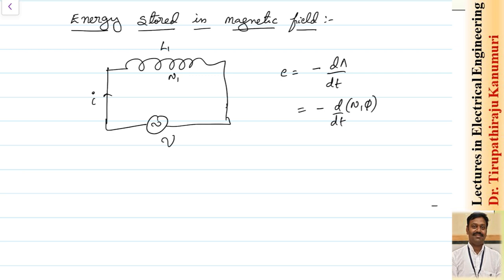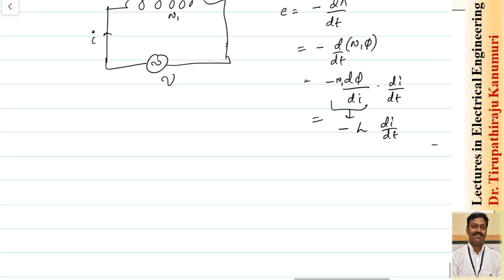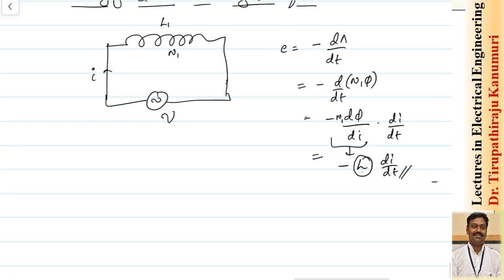The flux linkages equals N1 multiplied by the flux at that instant. This can be written as dΨ/di multiplied by N1, then by di/dt. This term N1·dΨ/di is defined as the self-inductance L, so the opposing EMF is e = −L·di/dt. The induced EMF depends on the inductance property of the material and the rate of change of current.